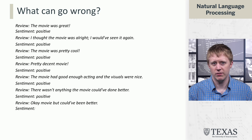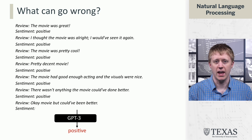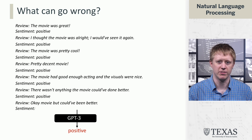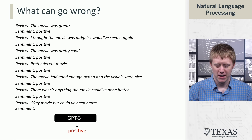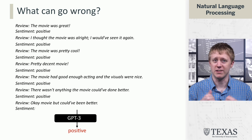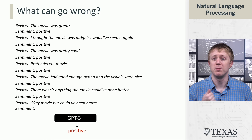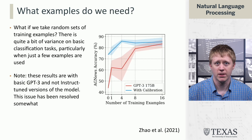It turns out this won't work well — the model will predict positive here. Why does it predict positive? Because all of the examples given were positive sentiment. You might think that was an obvious mistake, but it turns out that actually getting the right set of examples can be subtle in a lot more ways than just this one.